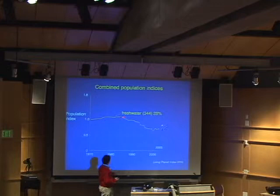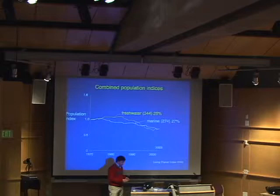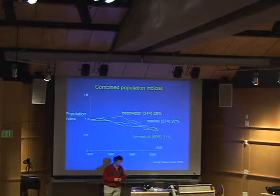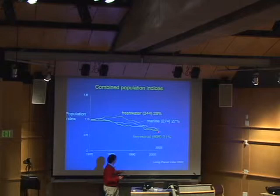Here are freshwater populations — not just of fish, but other things living in freshwaters — and here's tracking their trends through time: a 28% decline. Here are 274 marine populations, invertebrates as well as vertebrates, and a fairly similar rate of decline. And here are the terrestrial taxa of birds, mammals, and things like that, which are declining in a fairly similar sort of manner. The endpoints are surprisingly similar.